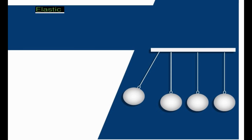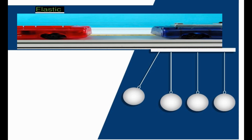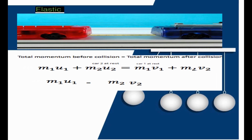Elastic collisions are collisions in which both momentum and kinetic energy are conserved. The total system kinetic energy before the collision equals the total system kinetic energy after the collision. In a collision between a truck and a car, the total system momentum is conserved.